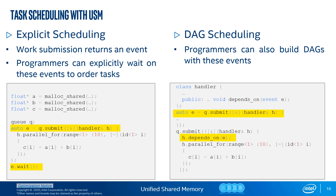The second way events can be used is via the DependsOn function. The handler class contains a method named DependsOn, which accepts either a single event or a vector of events and informs the runtime that the command group being submitted requires the specified events to complete before the specified task may execute.